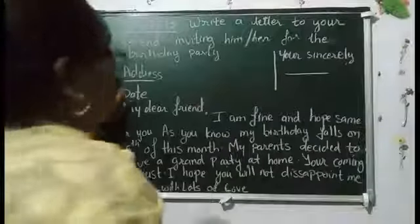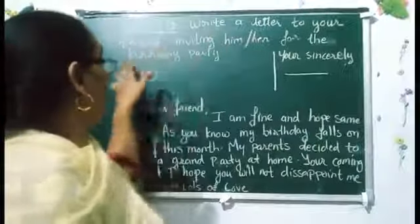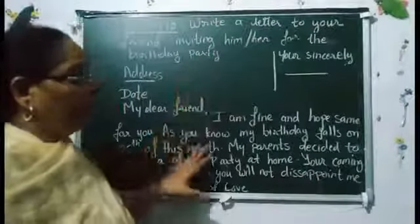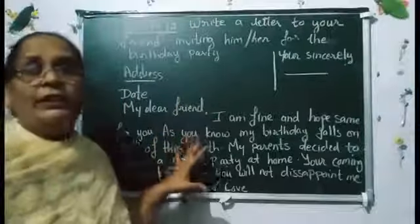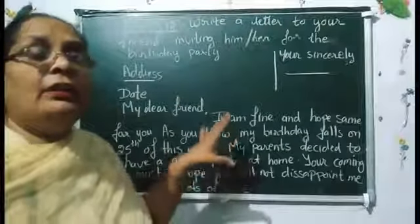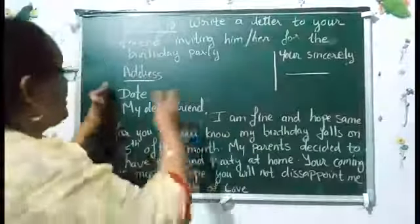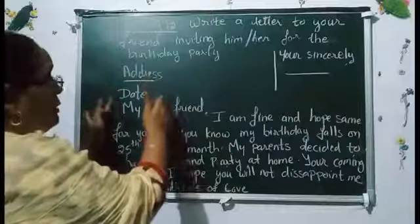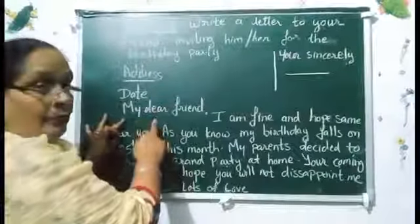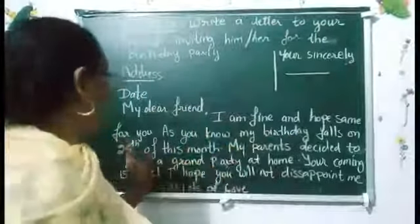Next activity is Activity 12: Write a letter to your friend inviting him for a birthday party. There is a pattern provided. First write the address, then the date, then 'My dear friend.' Start with: I am fine and hope same for you.